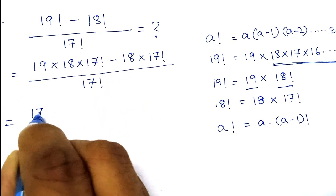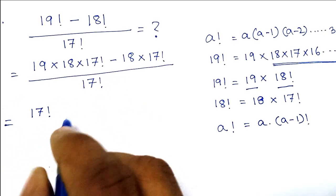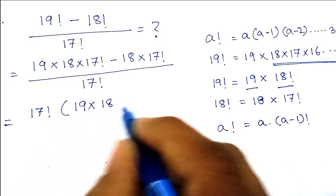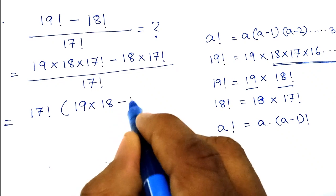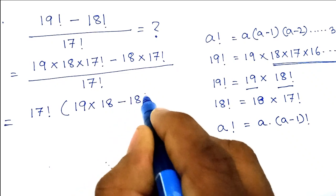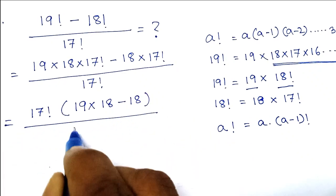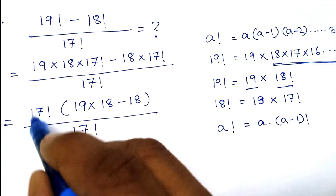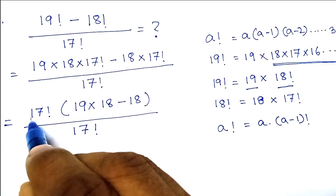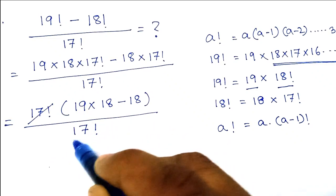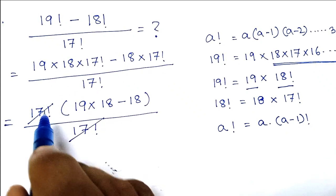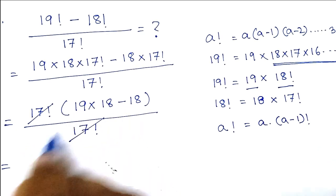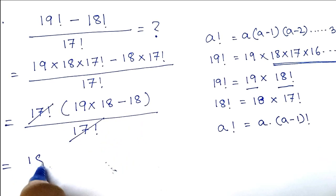This expression has become a very easy one. We can take 17th factorial as common, and inside the bracket there will be 19 into 18 minus 18. At the denominator there is also 17th factorial, and since 17th factorial is greater than 0, we can cancel the denominator and numerator.